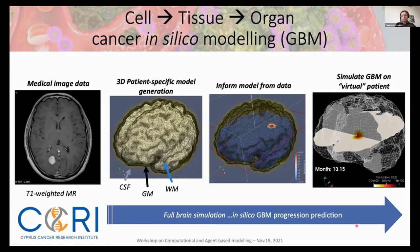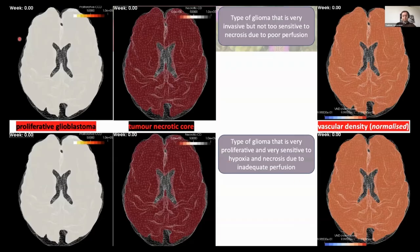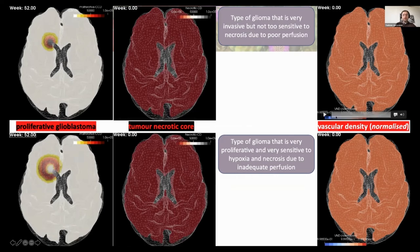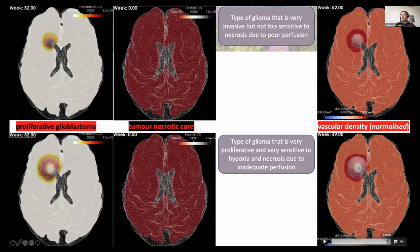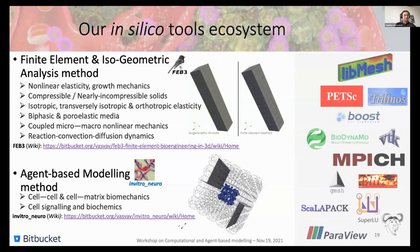In a project funded by the Cyprus Cancer Research Institute, we aim to investigate in silico the prediction of treatment response in stage two rectal cancer patients in Cyprus, combining chemo and radiation therapy and using pertinent clinical data such as MRI and CT scans to validate the models. These are preliminary results showing the formation of the proliferative glioblastoma mass, the necrotic core, and contours of the hypervascularized periphery of the tumor and the necrotic region.